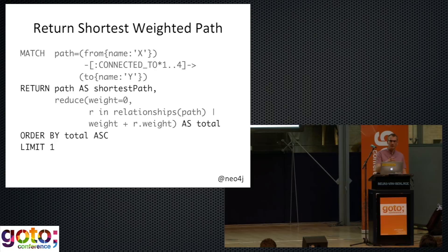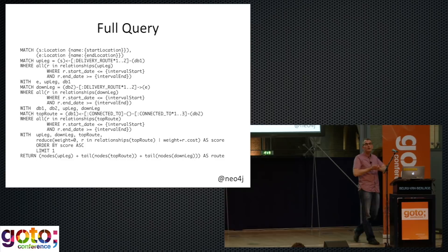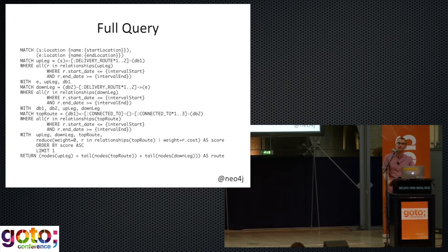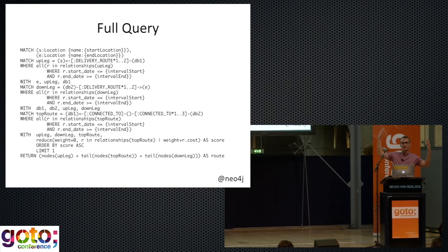This is what the overall query looks like. It looks a bit more complex, but the equivalent in the relational world might be several tens of pages of joins. We've got three different legs: the up leg, the down leg, and the bit in between at the top, and then we do those path calculations across the whole thing. That gives us the optimal route through the system.